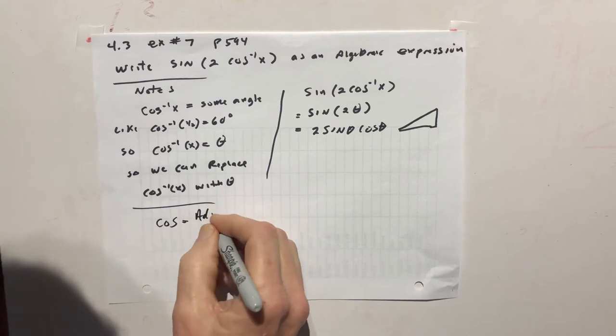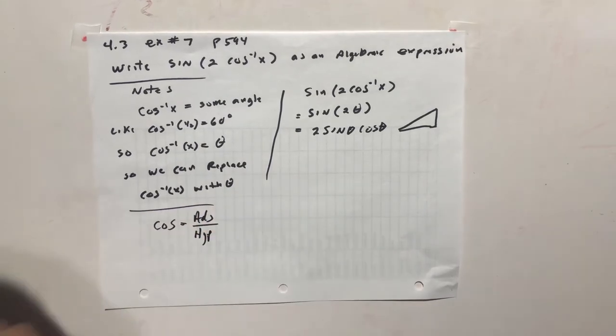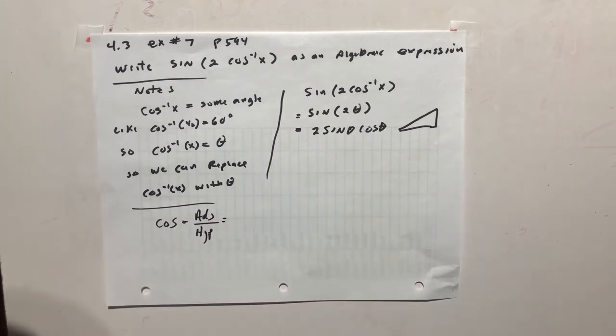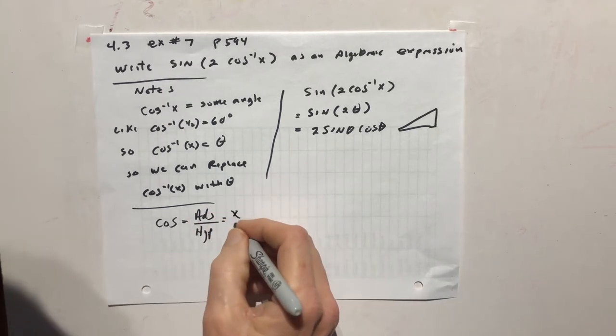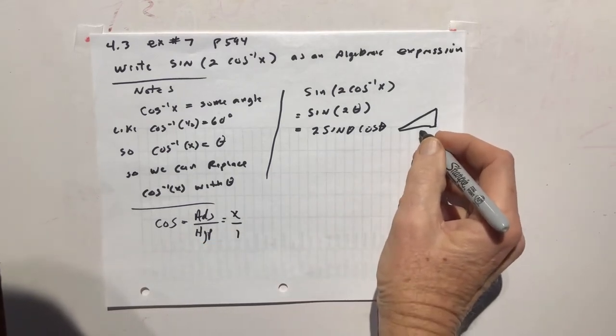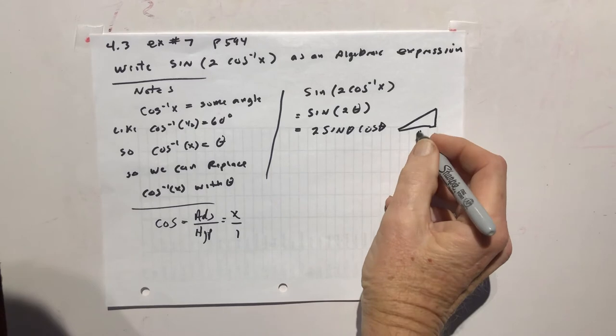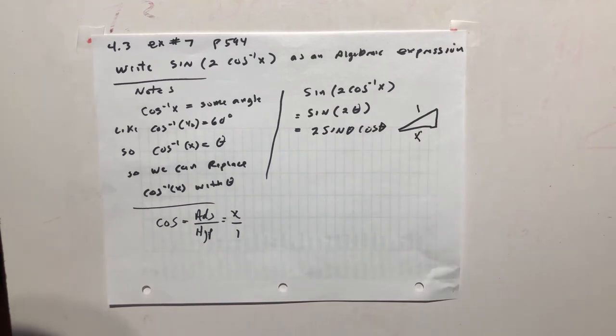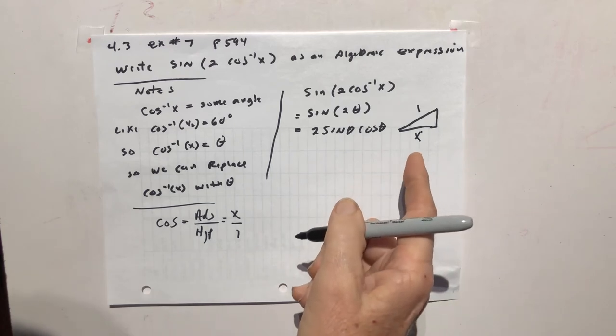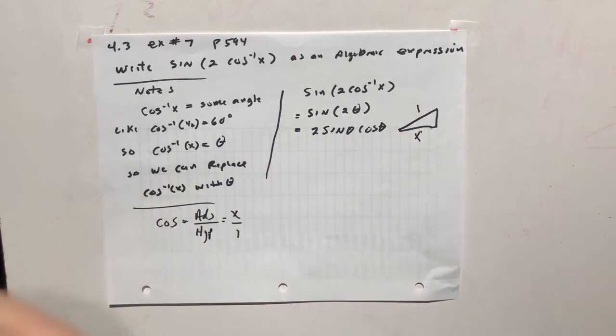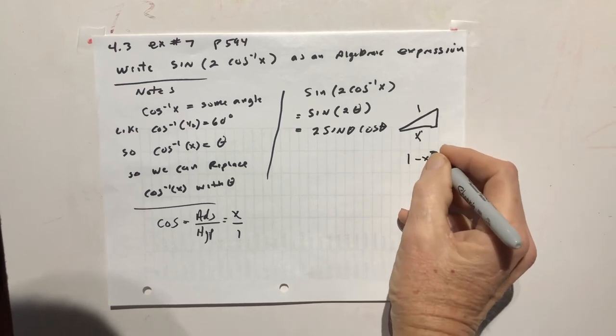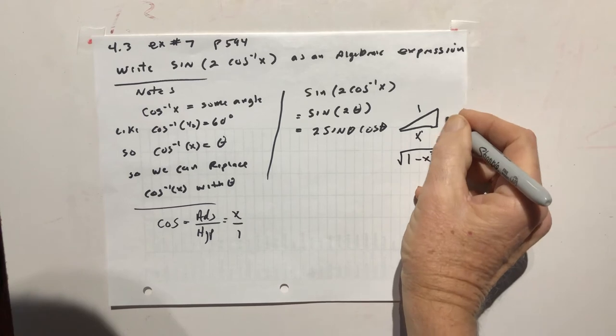Cosine equals adjacent over hypotenuse. And in this problem, there's only an x, but you assume the x is over 1. So that's x over 1. So the adjacent is x, and the hypotenuse is 1. And we're missing that side. To find it, do the Pythagorean theorem, which is going to be 1 squared minus x squared, square root, and that gives you this side.